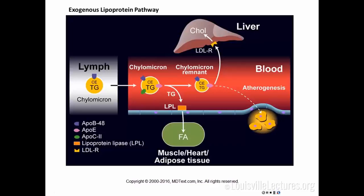As you clear the triglycerides, you will eventually lose the ApoC. ApoE is also present and can bind to the LDL receptor — that is how the chylomicron remnant, which now contains more cholesterol than the chylomicrons themselves, is taken up by the liver for further metabolism. If you have ApoE deficiency or mutation, you will accumulate chylomicron remnants, and because they are rich in cholesterol, they can cause atherosclerosis. This is called dysbeta lipoproteinemia — you get accumulation of chylomicron remnants. This is the exogenous pathway of lipoprotein metabolism.